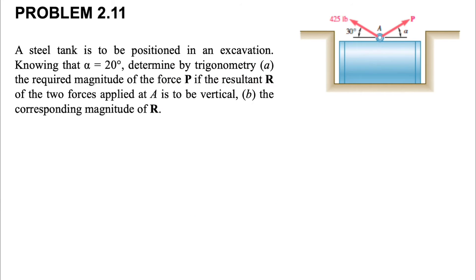Welcome back. In today's question we need to determine the required force P so that the resultant of these two forces applied at point A is vertical. In part B we need to find the magnitude of R. We have some information: alpha is 20 degrees.